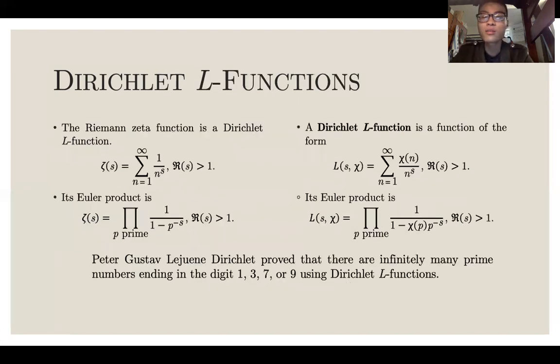These are important because we define the Dirichlet L functions with the Dirichlet characters. The Riemann zeta function is a Dirichlet L function. A Dirichlet L function is a function of the form chi of n over n to the s, and it has this Euler product. These L functions are so powerful because we can prove that there's an infinite number of primes ending in the digit 1, 3, 7, or 9. This is stronger than the result Euclid proved. With L functions, we say that there's an infinite number of primes ending in 1, 3, 7, or 9.